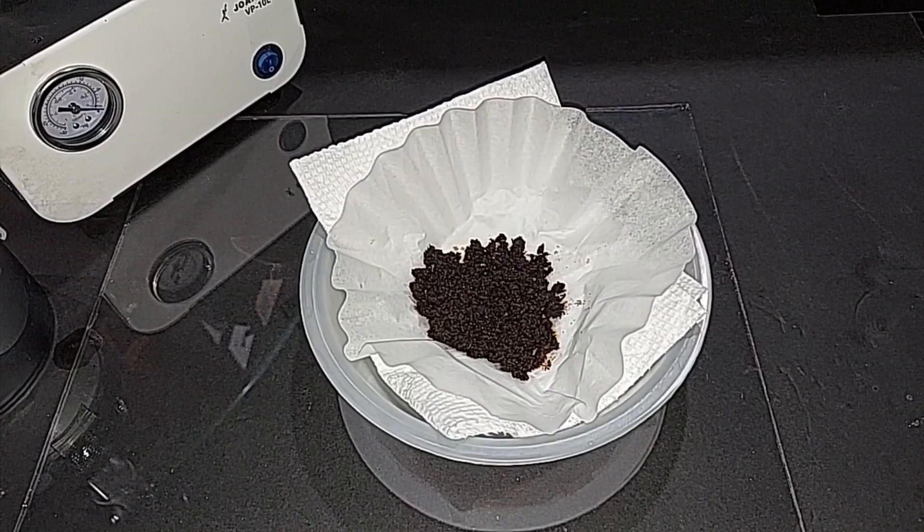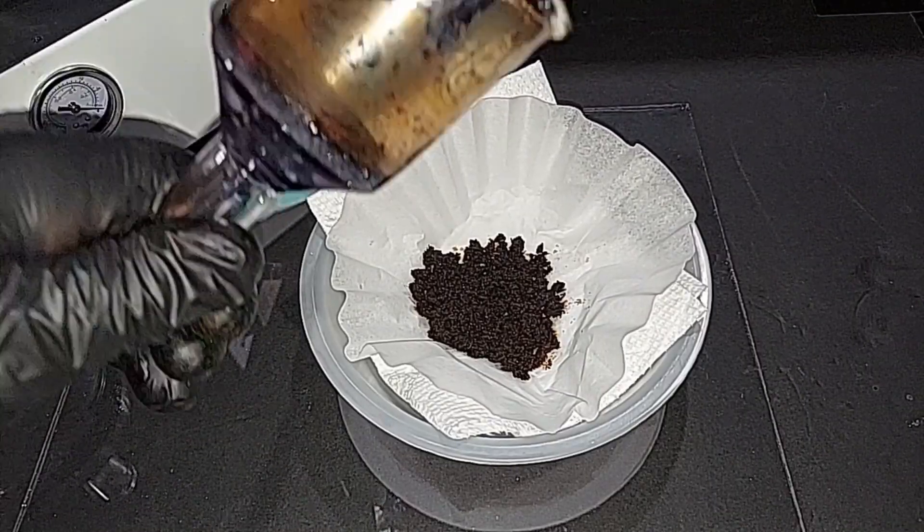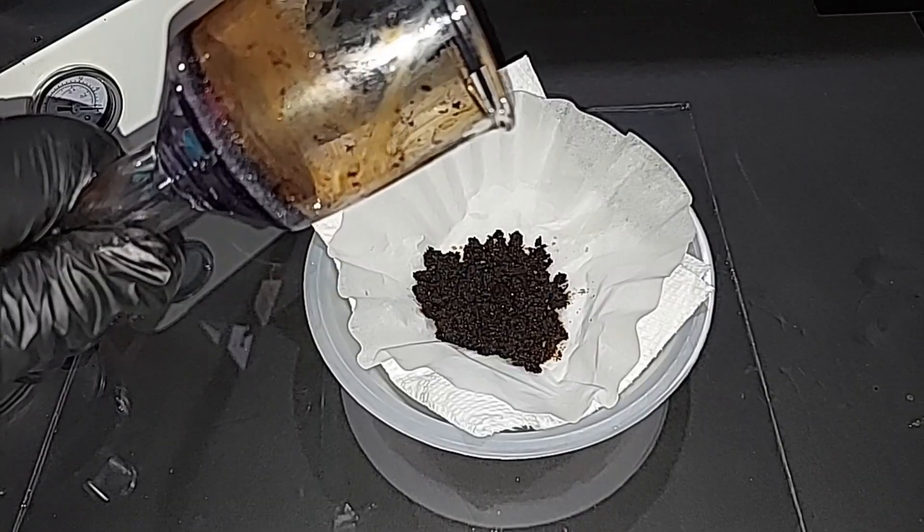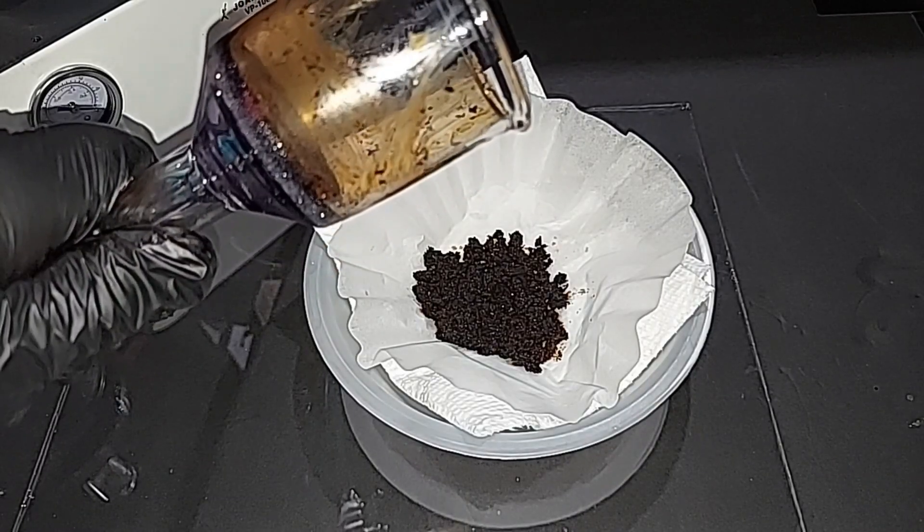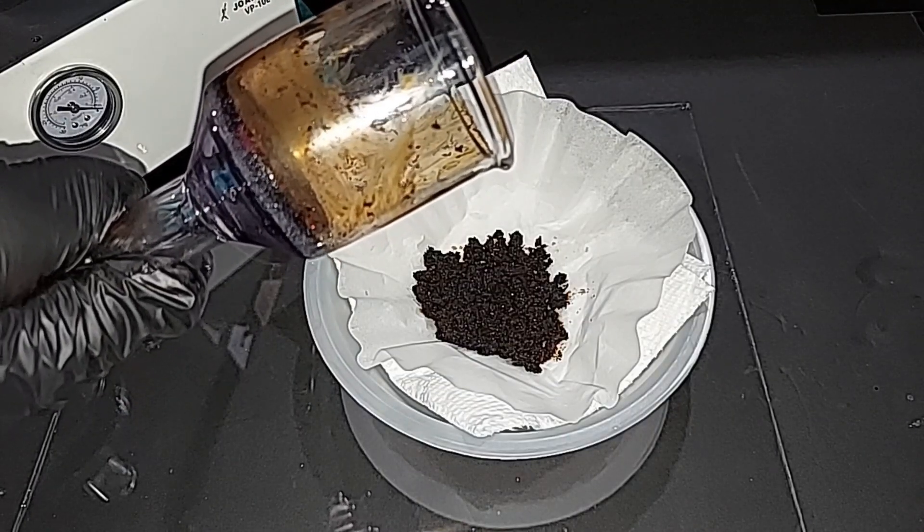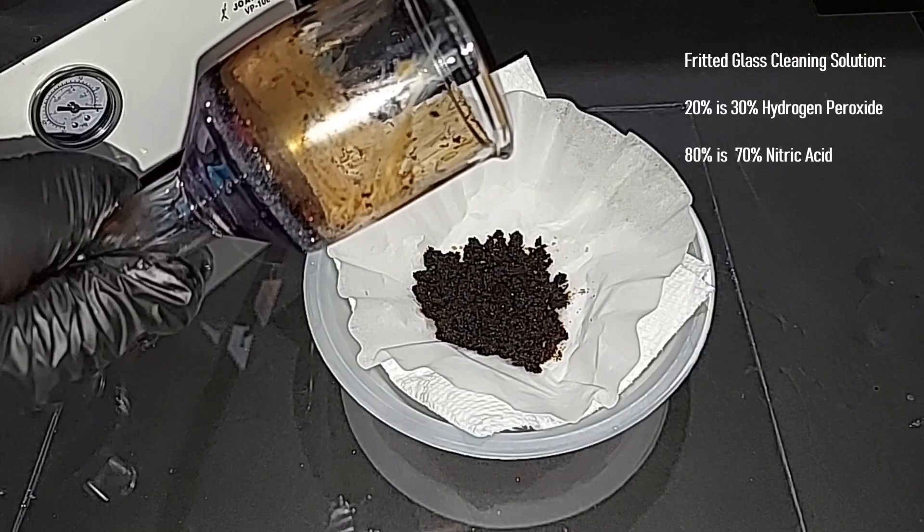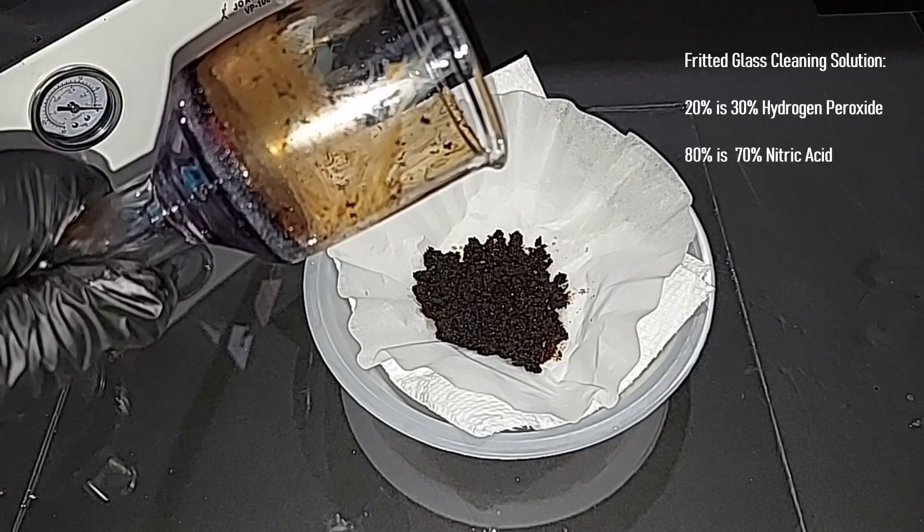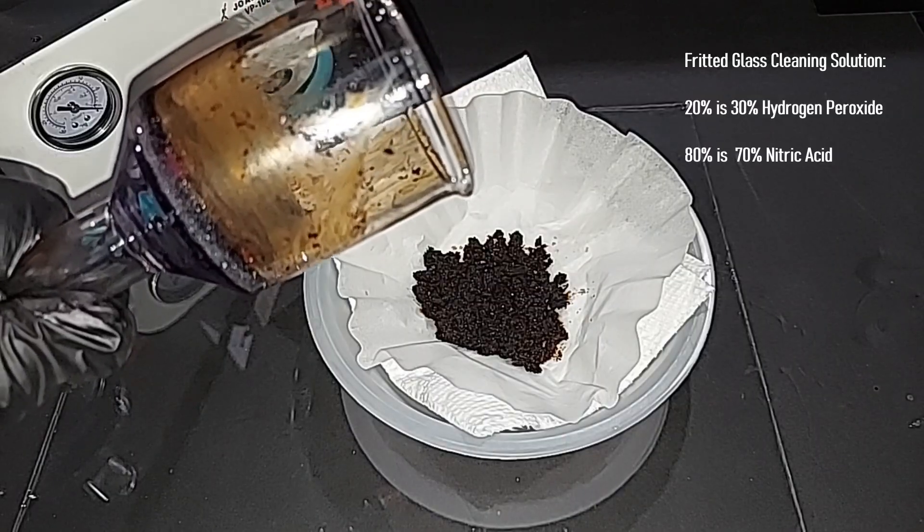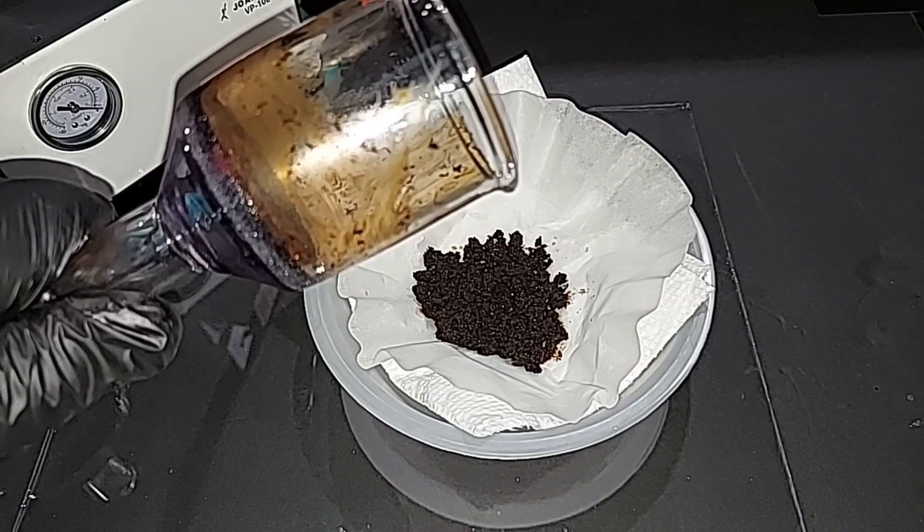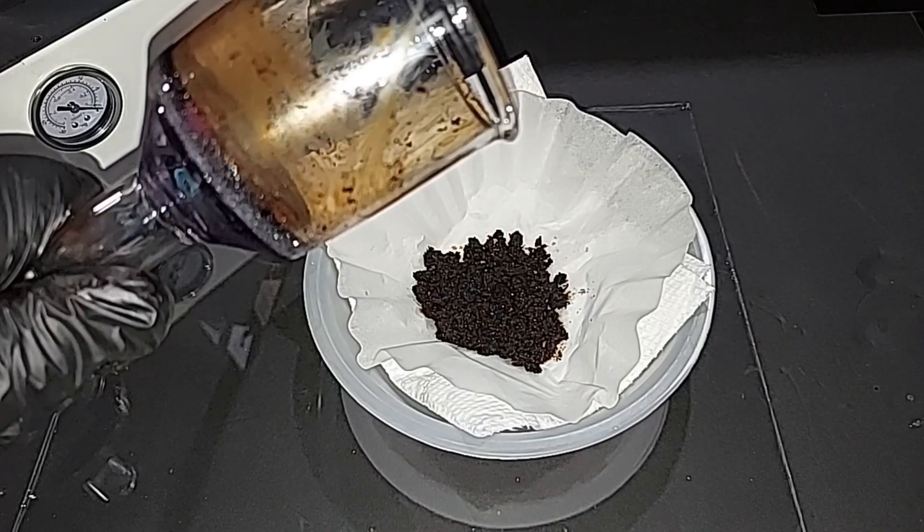When it's dry, we'll weigh it. A couple of comments here. To clean my fritted glass earlier when I filtered it to get the manganese dioxide out, it took a lot of trial and error, but I mixed 20% of the solution as 30% hydrogen peroxide and 80% as 70% or concentrated nitric acid. I put about 50 milliliters in here, and within 10 minutes it was white. I couldn't believe how well it worked.